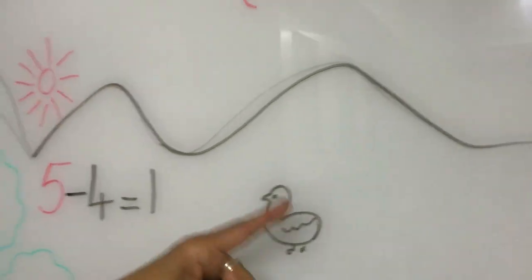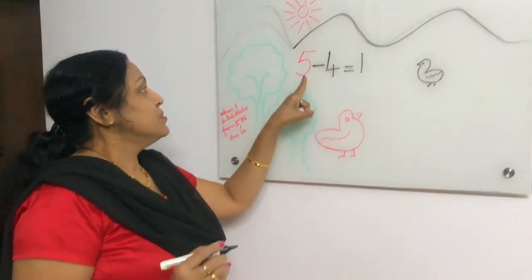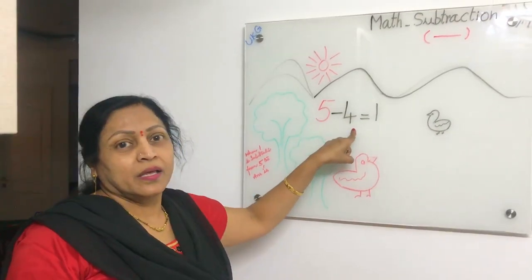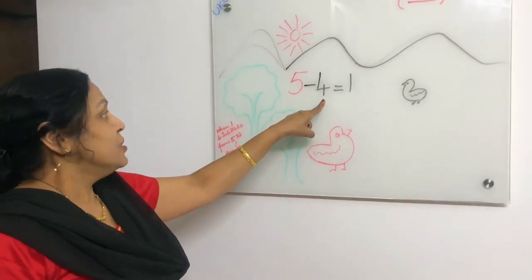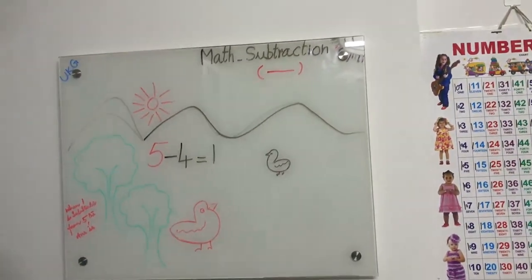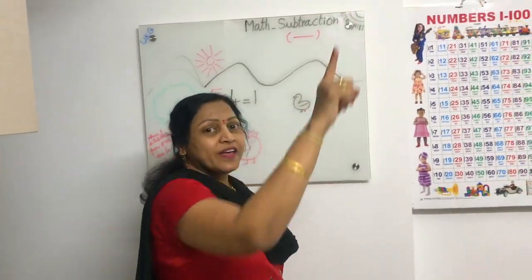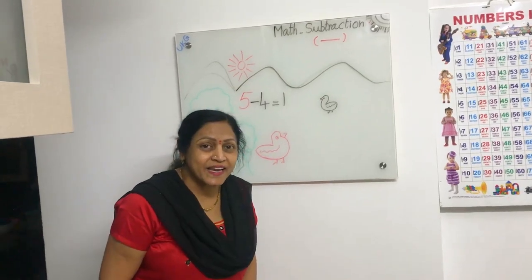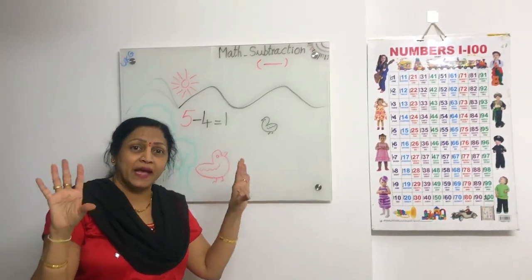We subtracted four — four little ducks went out, and only one came back. So out of five, only one came back; four did not come back. Answer is one. Now, one little duck went out one day, over the hills and far away. Mother duck said quack, quack, quack, quack. And none of the ducks came back.